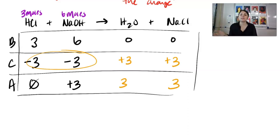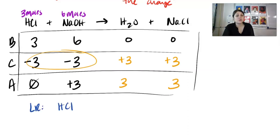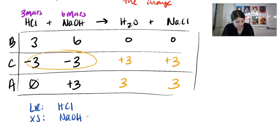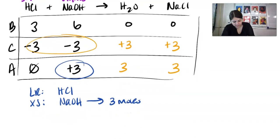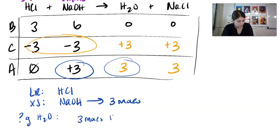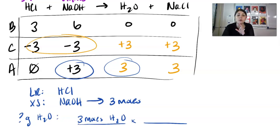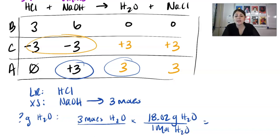If the question asks what the limiting reactant is, you would say hydrogen chloride. If it asks for the reactant in excess, you would say sodium hydroxide. If they ask how much of the excess remains, it would be 3 moles, because that is in the after row. And if they asked how many grams of water were formed: we know 3 moles were formed, and the molar mass of water is 18.02 grams per mole. Multiply 3 moles by 18.02, and you get 54.06 grams of water formed.